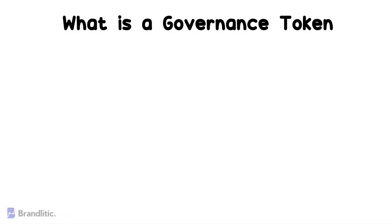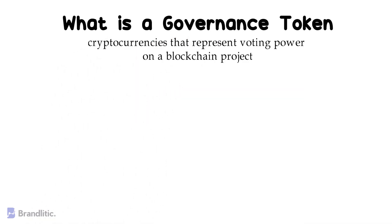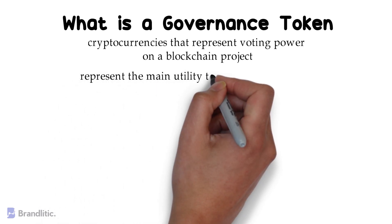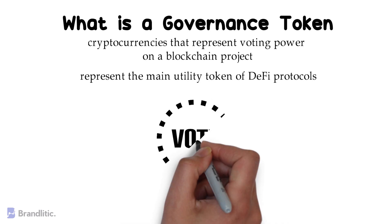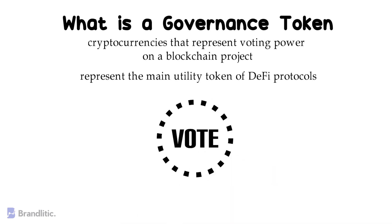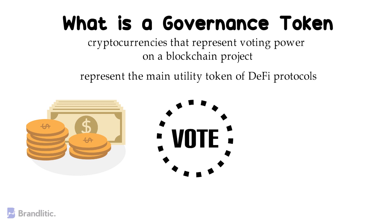Governance tokens are cryptocurrencies that represent voting power on a blockchain project. They represent the main utility token of DeFi protocols since they distribute powers and rights to users via tokens. With these tokens, one can create and vote on governance proposals in the network, and community members can spend tokens to directly influence the direction and characteristics of the protocol.